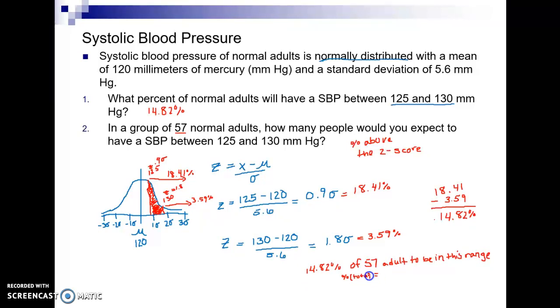So one way to solve a percent problem is to take the percent multiply it times the total and that will equal the part. If I do this strategy I have to change the percent to a decimal so 14.82 divided by a hundred gives me 0.1482 times the 57. Close my parenthesis there and type that on my calculator so I got 8.44. Rounding to a whole person that would be about eight people.